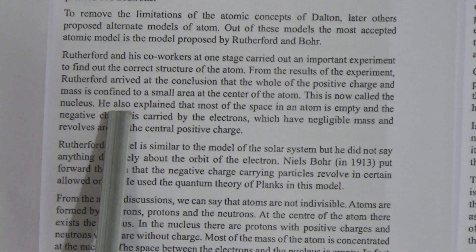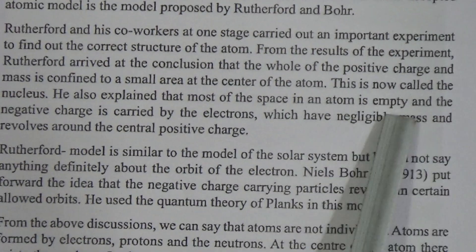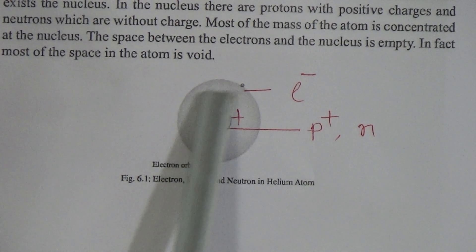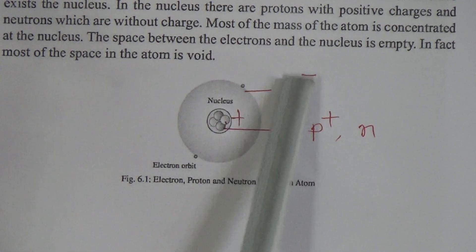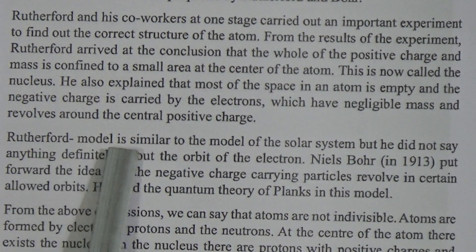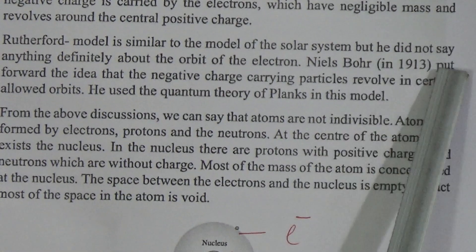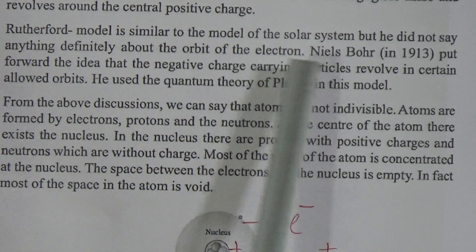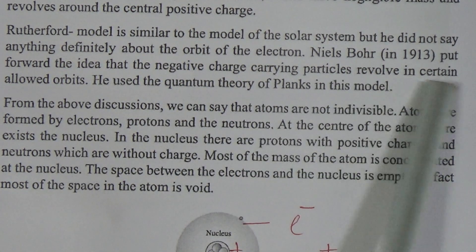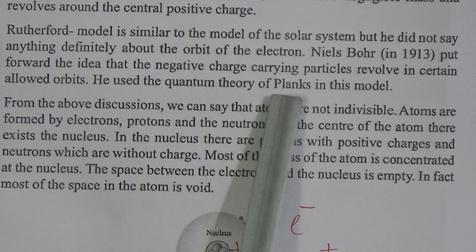Rutherford also explained that most of the space in the atom is empty and the negative charge is carried by the electron. The space between the orbit and nucleus is empty, and the electron has negligible mass and revolves around the central positive charge. Rutherford's model is similar to the model of the solar system, but he did not say anything definite about the orbit of the electron. Niels Bohr put forward the idea that the negatively charged particles revolve in certain allotted orbits, using the quantum theory of Planck.